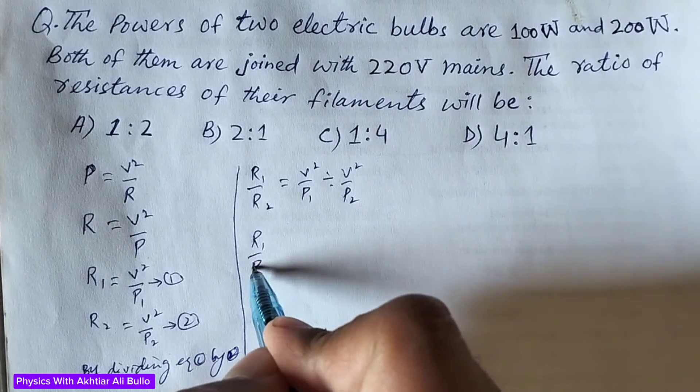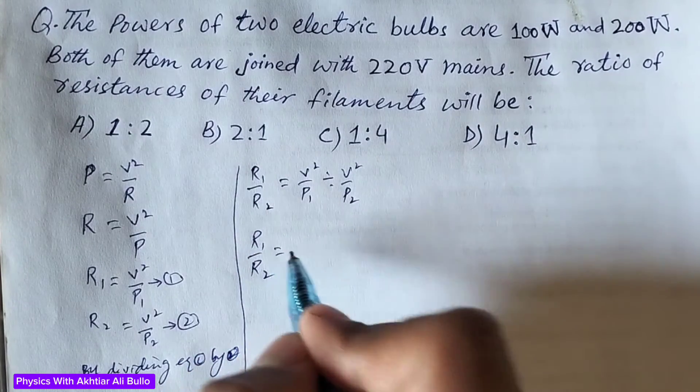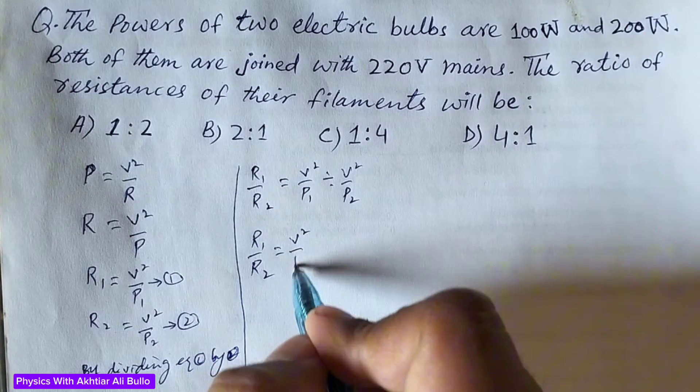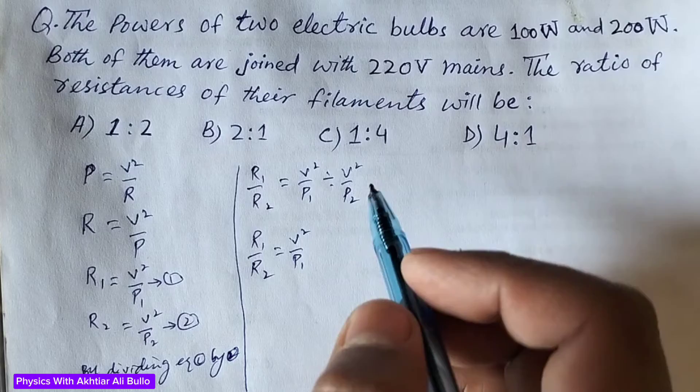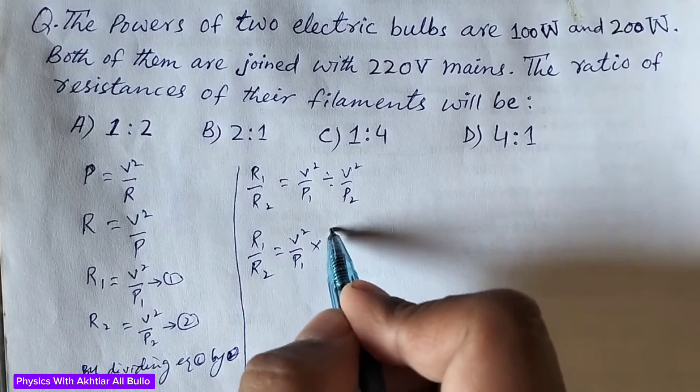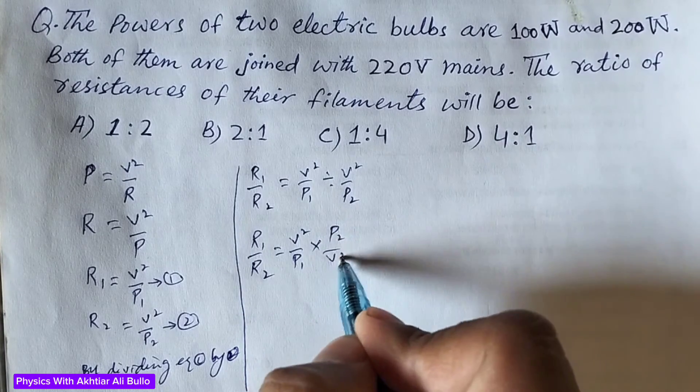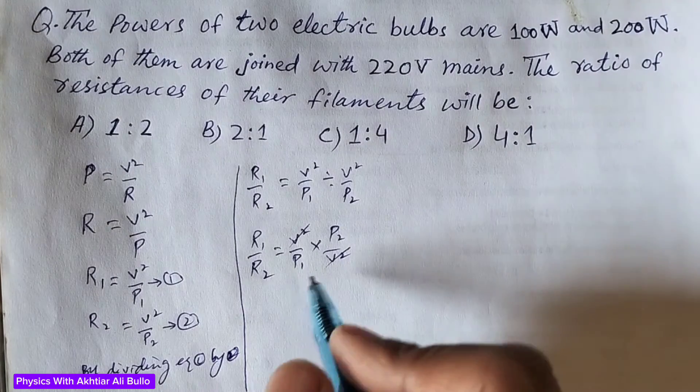So R₁ upon R₂ will be equal to V squared upon P₁. When we change division into multiplication, it will be P₂ upon V squared. V squared will get cancelled with V squared, so R₁ upon R₂ will be equal to P₂ upon P₁.